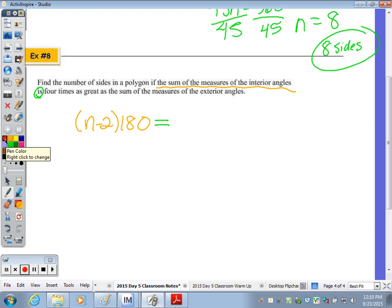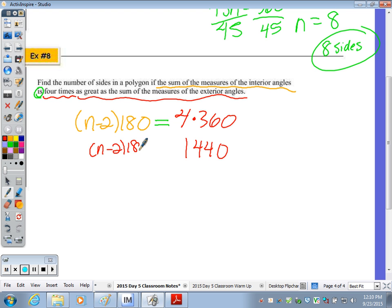The left side after the word if, the sum of the measures of the interior angles is always n minus 2 times 180. That's the formula. 4 times as great on the other side, the sum of the measures of the exterior angles, that's always 360. You may want to multiply 4 times 360 first. That's 1,440. Then we get n minus 2 equal to 8.